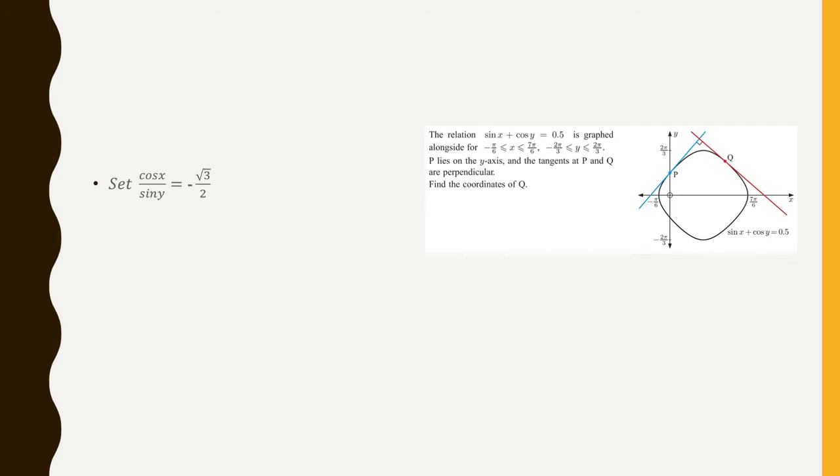So now, again, keep in mind, I want to find the coordinates of Q. So I know the slope. So I'm going to set the derivative, in other words, cosine of x over sine of y equal to the slope of line Q, which we found is negative root three over two.